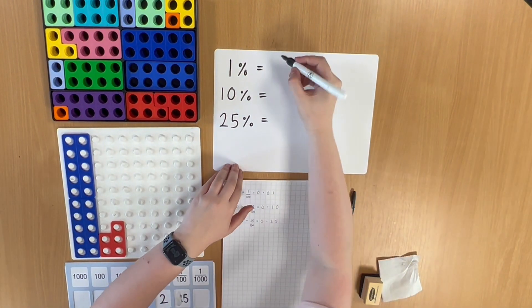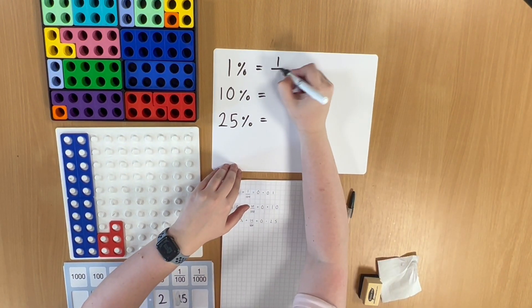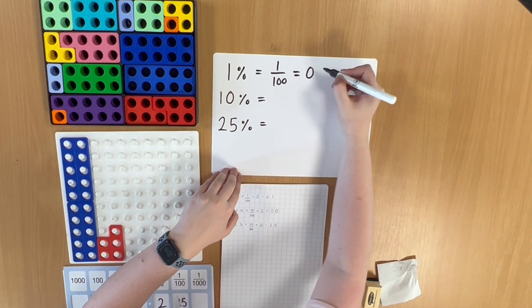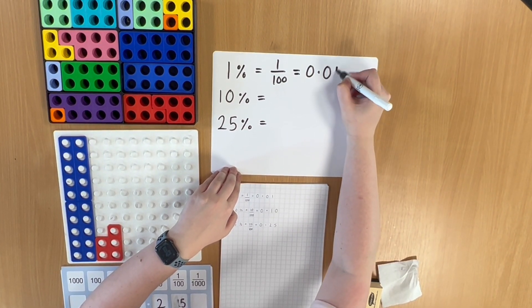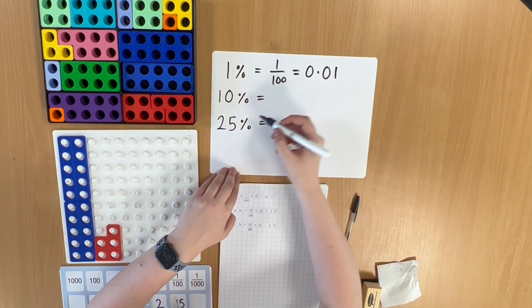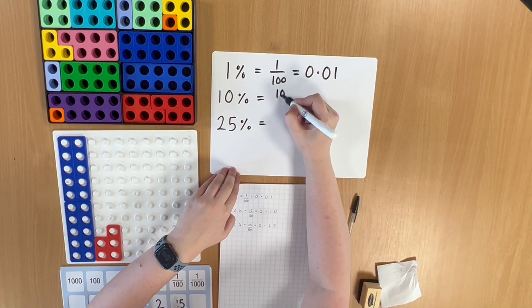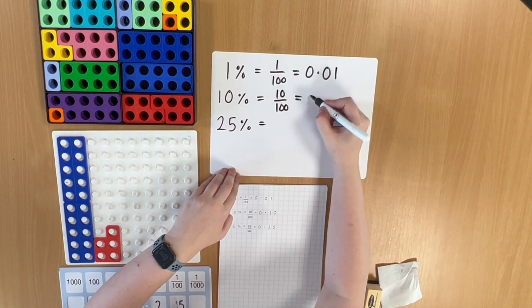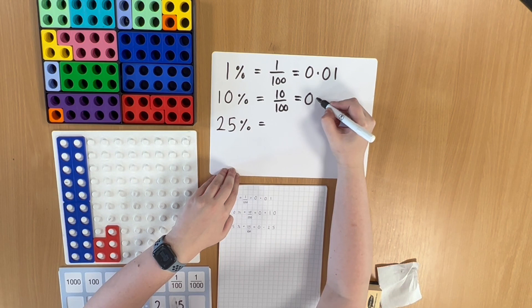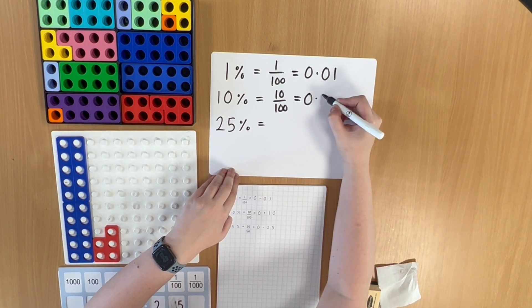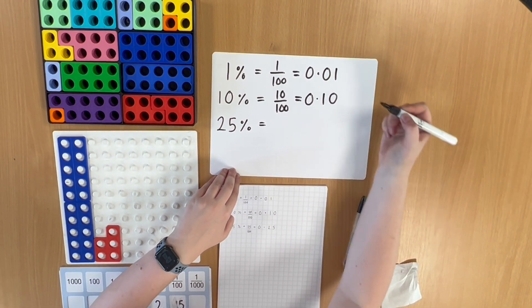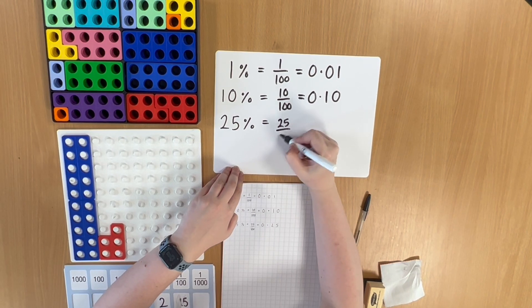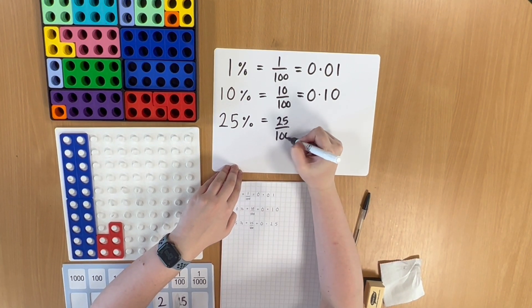1% equals 1 hundredth, which equals 0.01. 10% equals 10 hundredths, which equals 0.10. 25% equals 0.25.